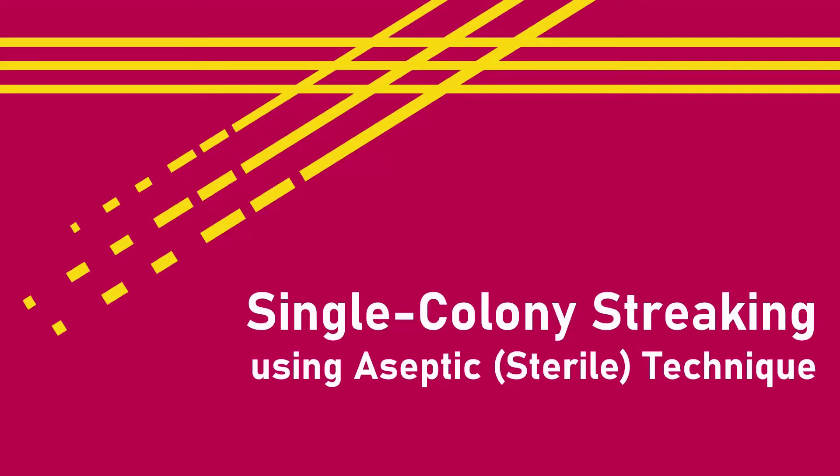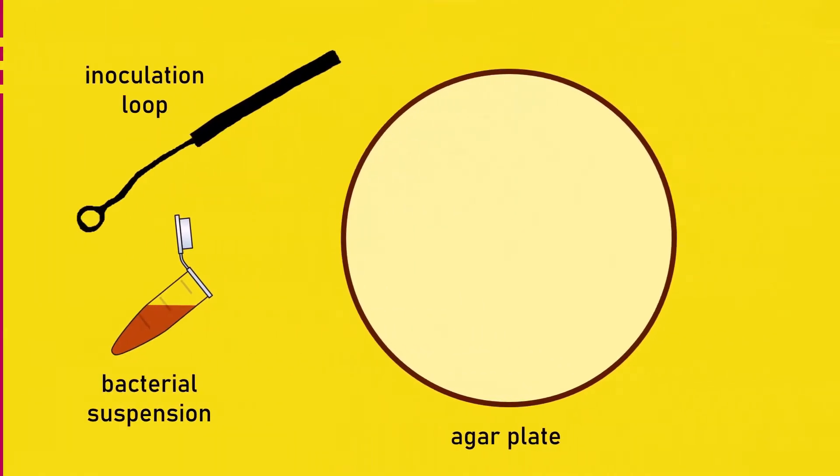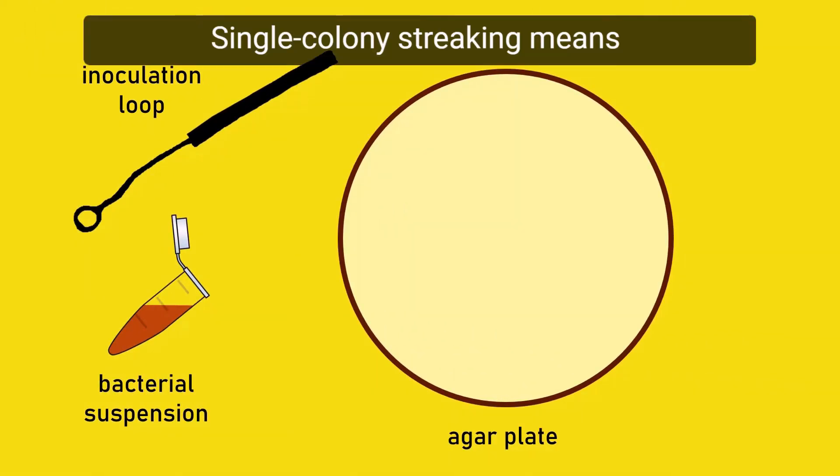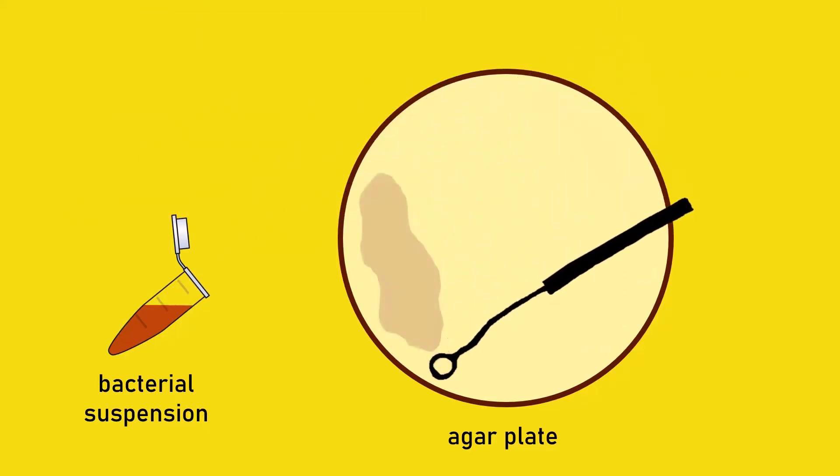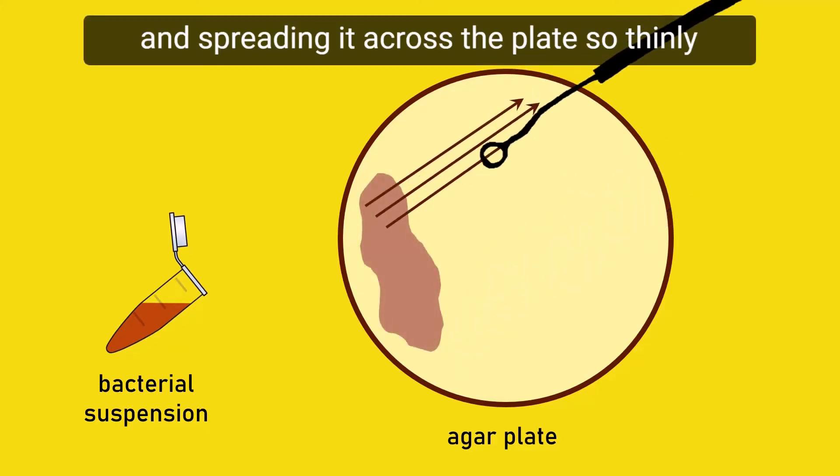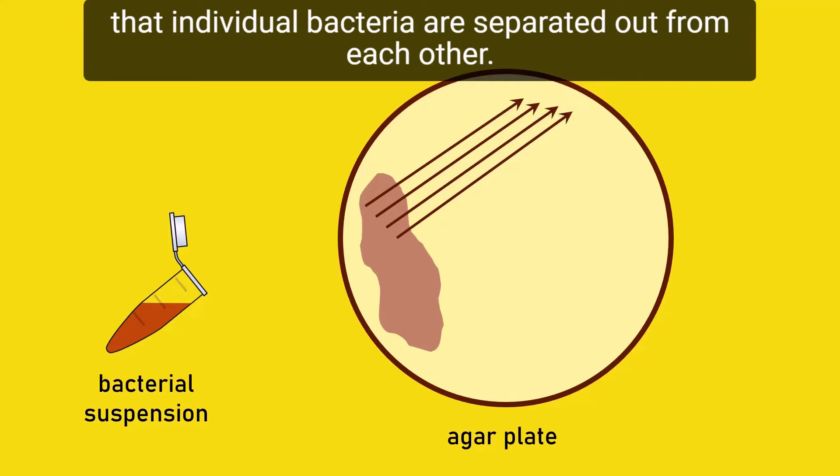Single colony streaking using aseptic sterile technique means taking a sample from a suspension of bacteria, adding it to an agar plate and spreading it across the plate so thinly that individual bacteria are separated out from each other.